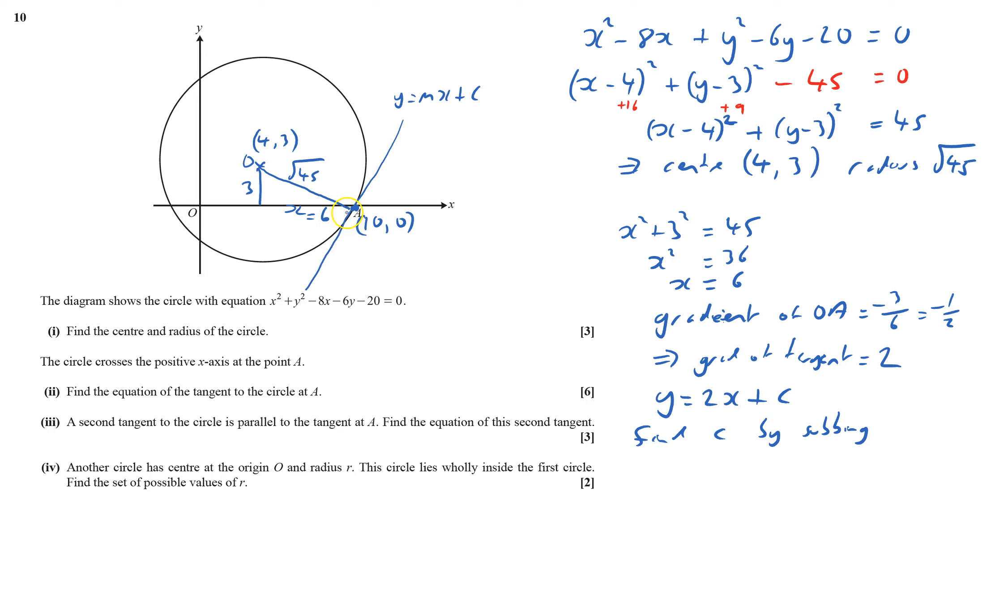I need to find c by substituting the point on that line, which is (10,0). So 0 equals 20 plus c, therefore c equals minus 20. My equation is y equals 2x minus 20.